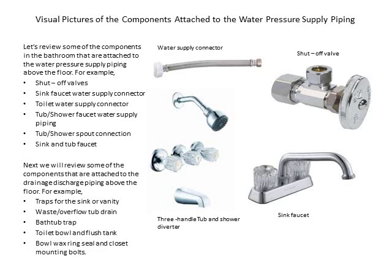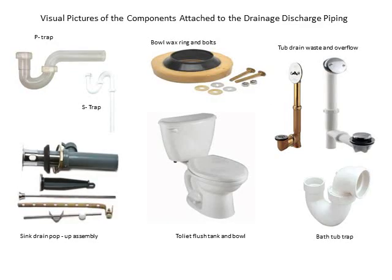Next, we will review some of the components that are attached to the drainage discharge piping above the floor. For example: traps for the sink or vanity, waste overflow tub drain, bathtub trap, toilet bowl and flush tank, bowl wax ring seal and closet mounting bolts. On the right-hand slide, you can see some pictures of the visual components attached to the water supply pressure piping.